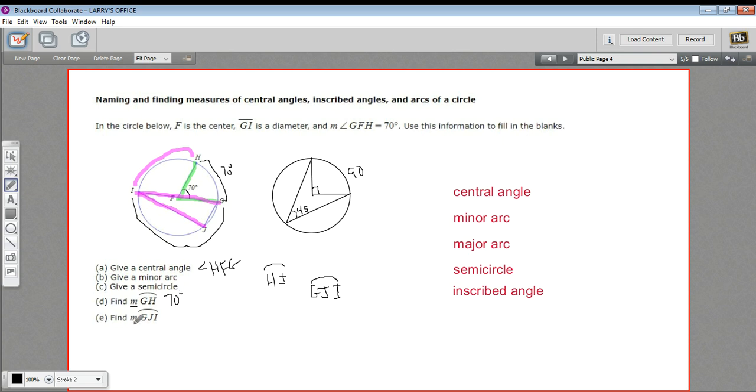And then it says find the measure of GJI. And GJI is just exactly the semicircle that I chose. And a semicircle is half of the circle. So we know that's going to be 180 degrees. So that's a little bit of work with measures and central angles and inscribed angles in a circle.